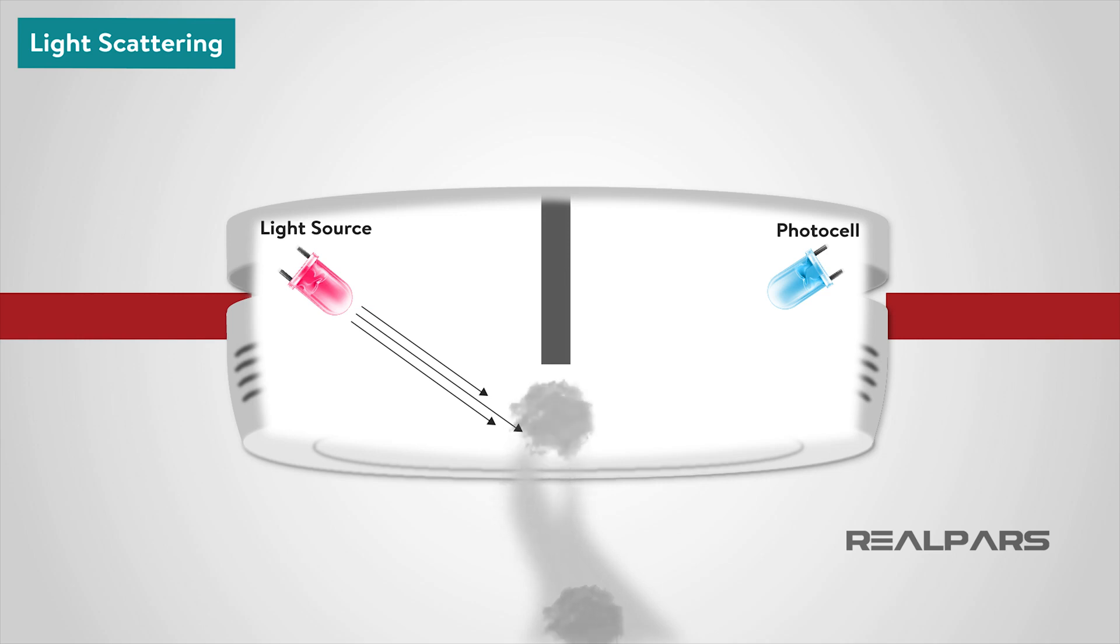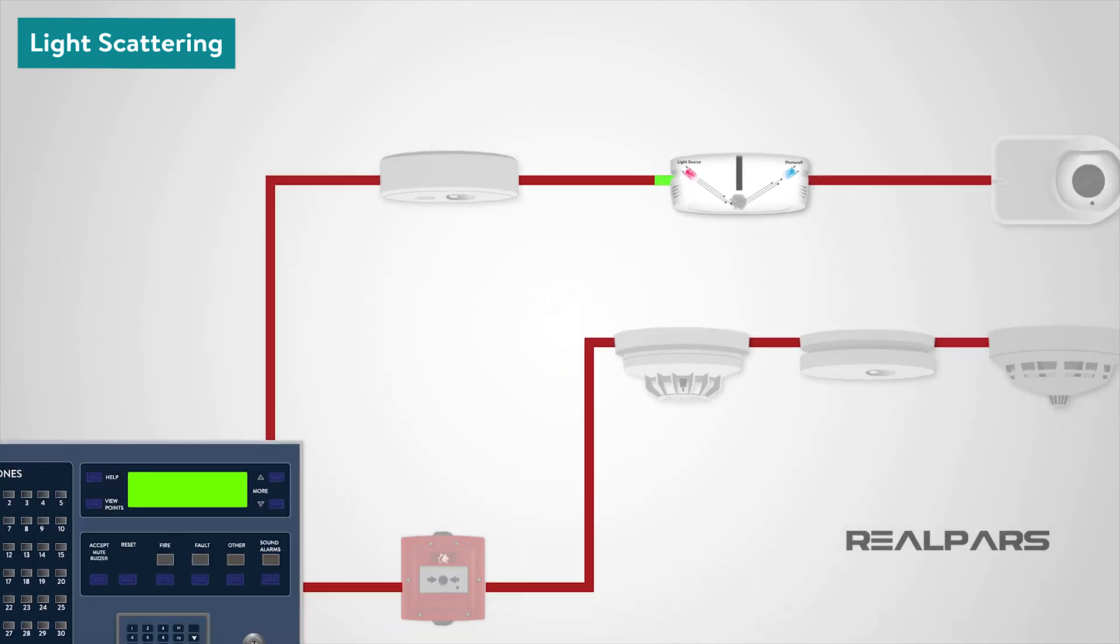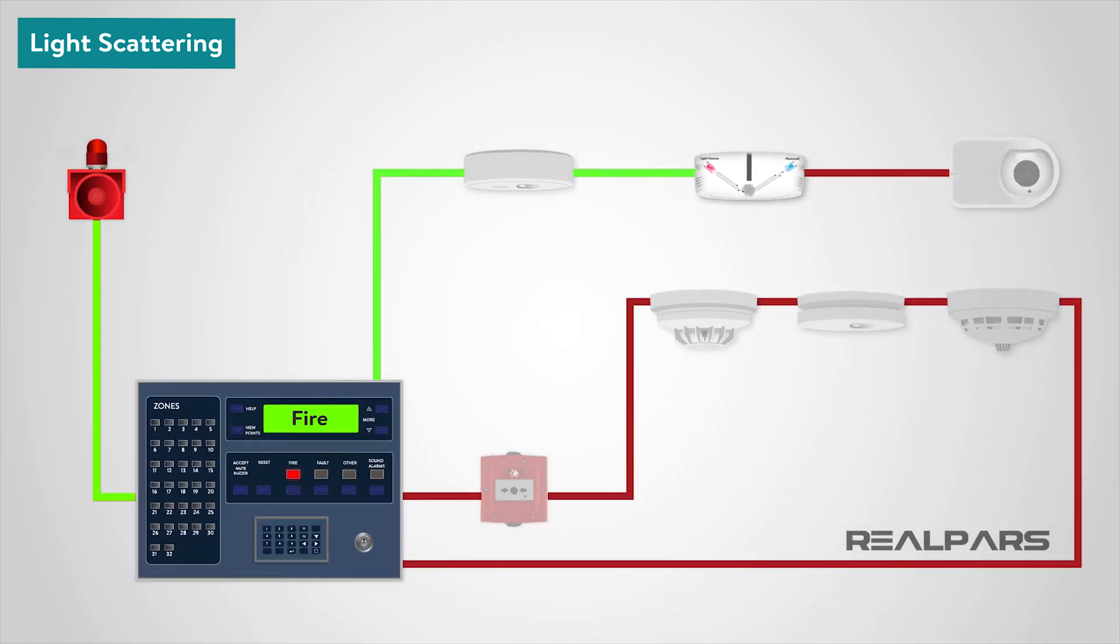The passage of smoke into the chamber causes the light from the source to be scattered and fall on the photocell. The photocell output is being used to initiate an alarm.